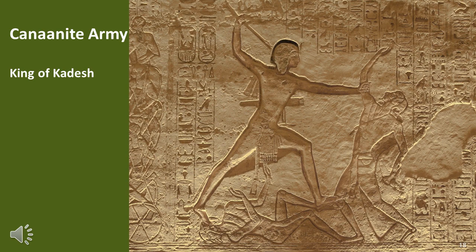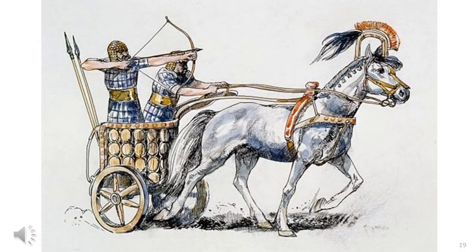Incidentally, the image you see there is presumed to show the King of Kadesh just about to be stabbed by the mighty pharaoh, although historically, to the best of my knowledge, he got away. It's estimated that the Canaanites may have fielded as many as 1,000 chariots — all two-horse, two-crew chariots, most likely archer or javelin-armed, with one crew member driving.